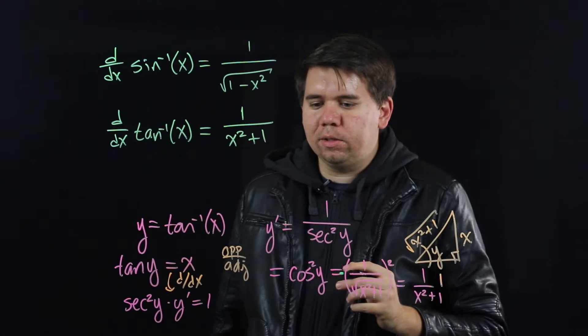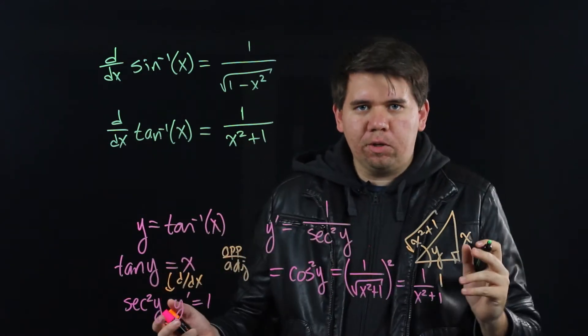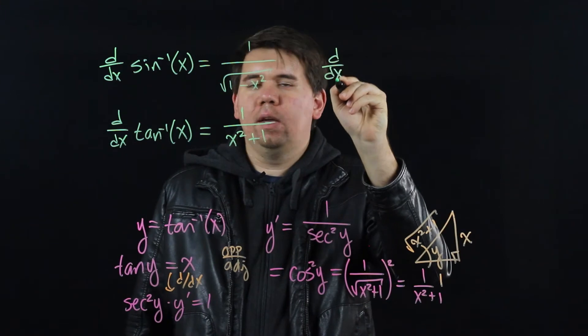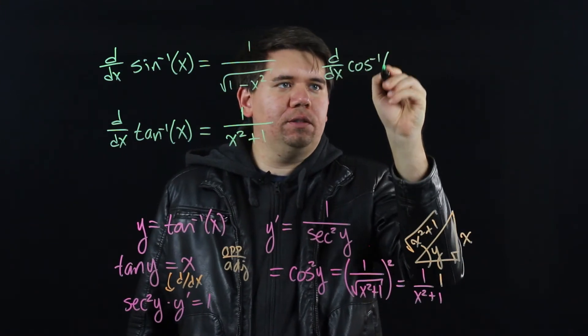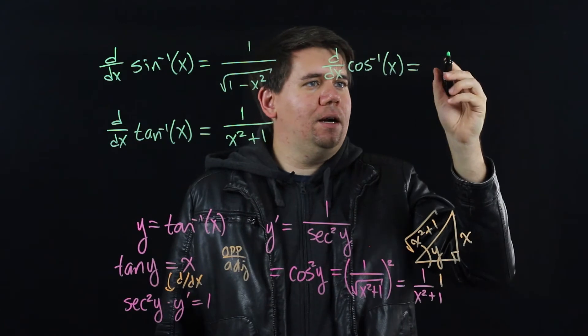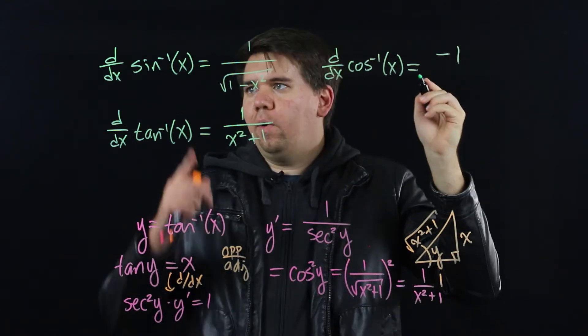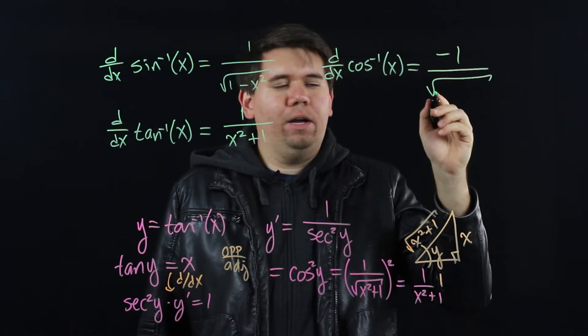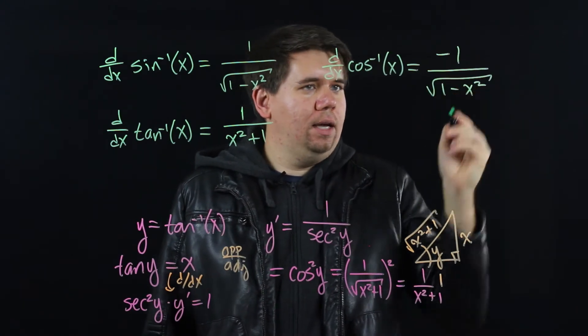How about the other trig functions? Well, you can argue in a very similar way. You can find out that the derivative of cosine inverse or arc cosine of x comes out just to be negative what it is for sine. Negative 1 over the square root of 1 minus x squared.